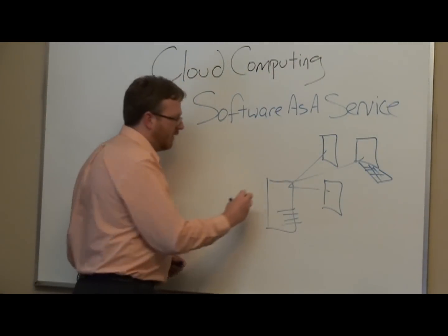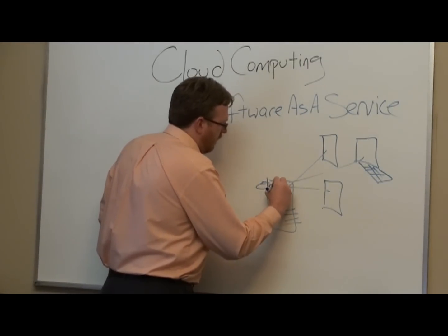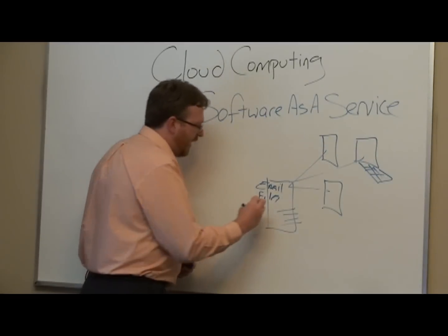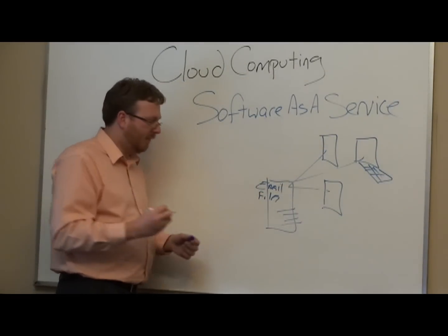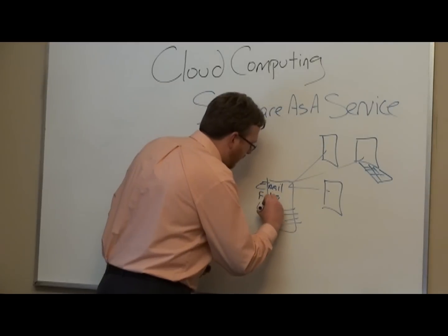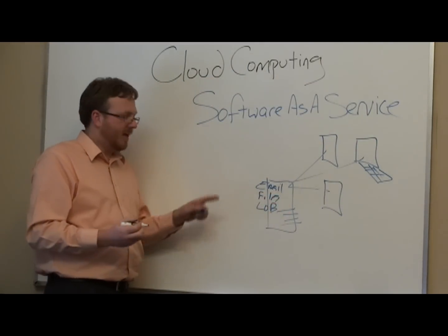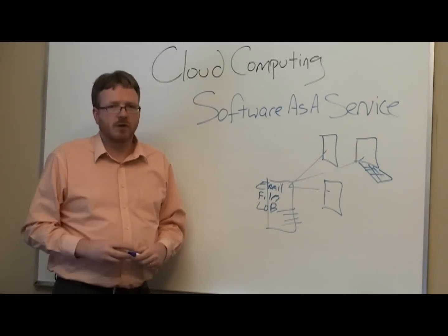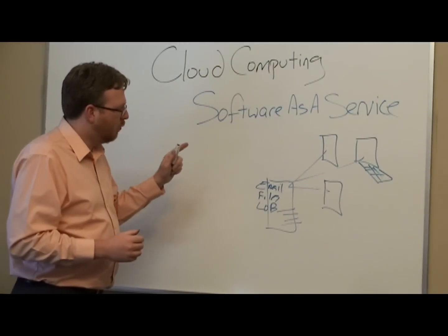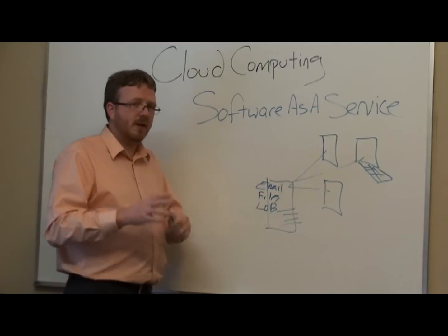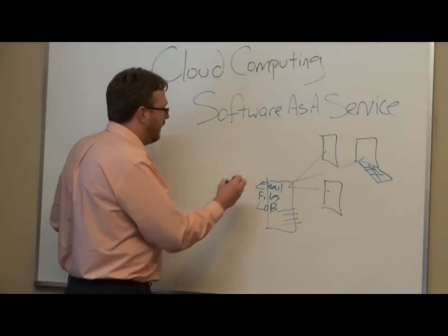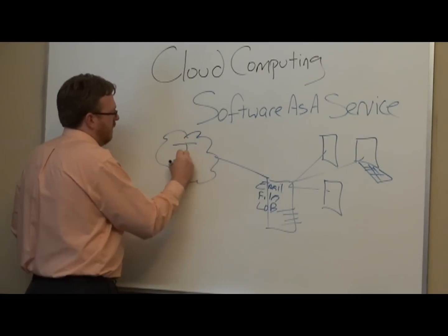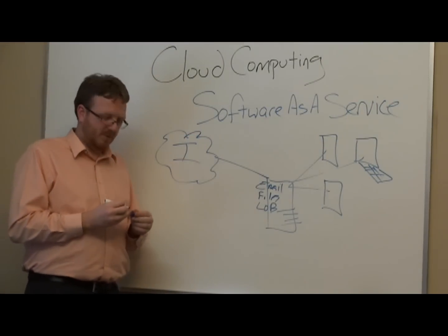On our server we've got our email and maybe we've got our files. In addition to that, every company that we work with tends to have one primary application. We call these a line of business application, and that line of business application is the one piece of glue that holds the whole company together. We start off here and get to this point, and then we've got internet connections — everybody got high speed internet connections, so we've got our connection out here to the internet.